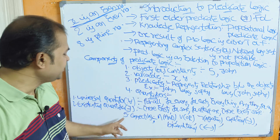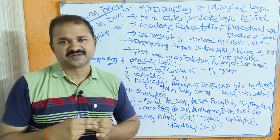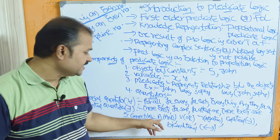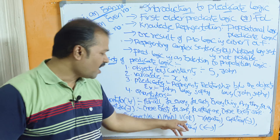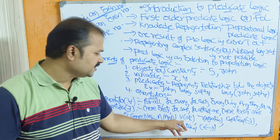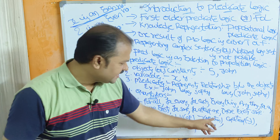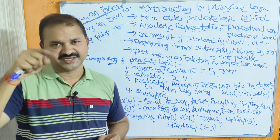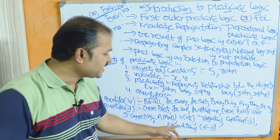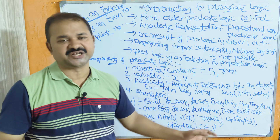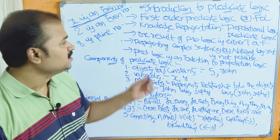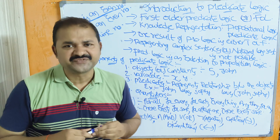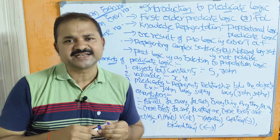The fifth component of predicate logic is connectives. There are mainly five connectives: AND (∧), OR (∨), negation (¬), implication or 'if-then' (→), and biconditional or 'if and only if' (↔). This completes the introduction to predicate logic.